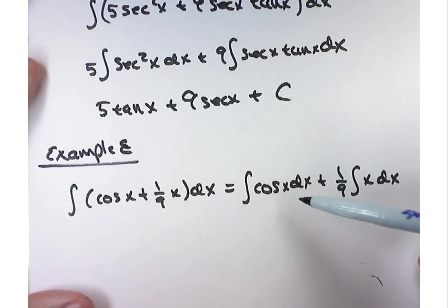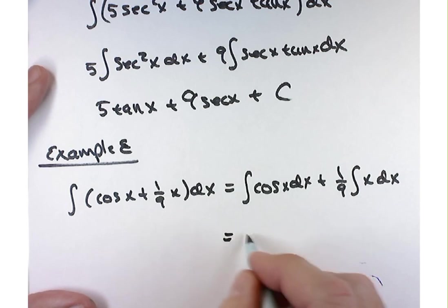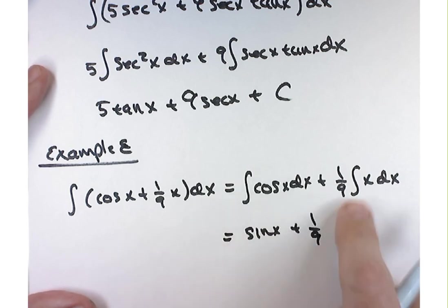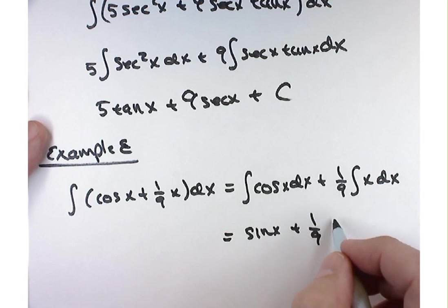Let's see. Carson, what's the antiderivative of cosine of x? Sine of x. Yeah. Sine of x plus 1 9th. Emmanuel, what's the antiderivative of x? Oh, my bad. It'd be x squared over 2. Yeah, x squared over 2.